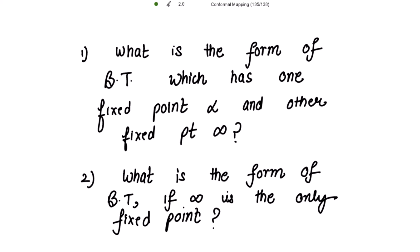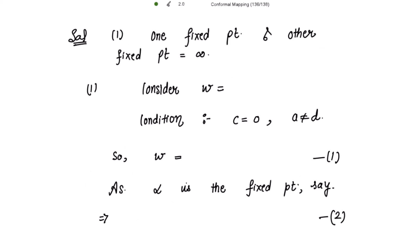The second question asks: what is the form of bilinear transformation if infinity is the only fixed point? Here also we are going to use the condition for only one infinite fixed point, and from there we can get the kind of bilinear transformation for this condition. So the first case involves two fixed points — one finite and one infinite.